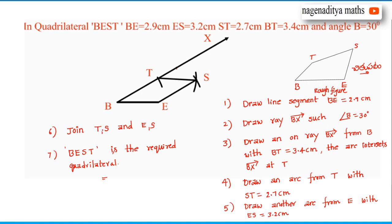The sixth step is to join T, S and E, S. The point of intersection of the two arcs is S. So BEST is the completed required quadrilateral.